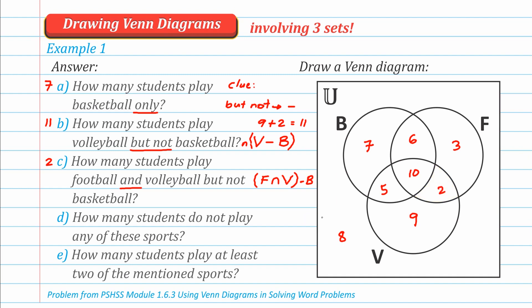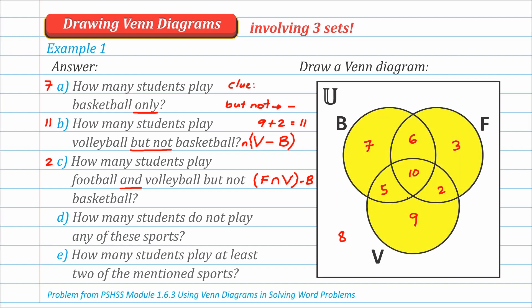Letter D: How many students do not play any of these sports? This is an easier question. Everyone inside the circles plays at least one sport. But the 8 outside the union doesn't play any of the three. Therefore, the answer is 8 — it's the cardinality of the complement of the union of B, F, and V.